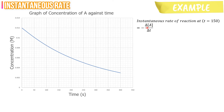Step 2: Draw a vertical line at T equals to 150 seconds, all the way up until it touches the curve at one point. Step 3: Draw a line that touches the curve at only one point. This line is called the tangent of the curve.